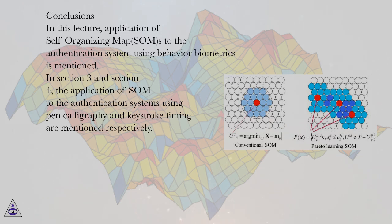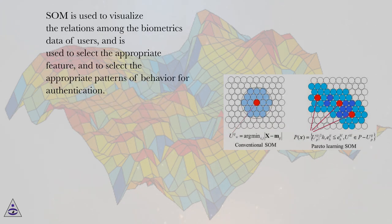In sections 3 and 4, the application of SOM to authentication systems using pen calligraphy and keystroke timing are mentioned respectively. SOM is used to visualize the relations among the biometrics data of users and is used to select the appropriate feature and to select the appropriate patterns of behavior for authentication.